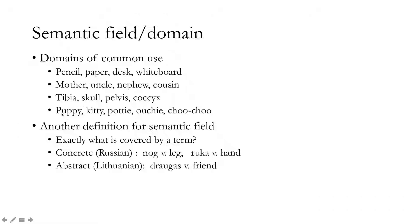Even words like 'puppy,' 'kitty,' 'potty,' 'ouchy,' and 'choo-choo' share a semantic domain — they're all children's names for things, part of child language. If you've already heard 'potty,' you're primed and much more ready for the word 'kitty' to appear than for the word 'skull,' even though a potty and a kitty have very little in common. Because they share a semantic domain, there is a strong relationship between these two words — stronger than there is between 'potty' and 'pelvis.'